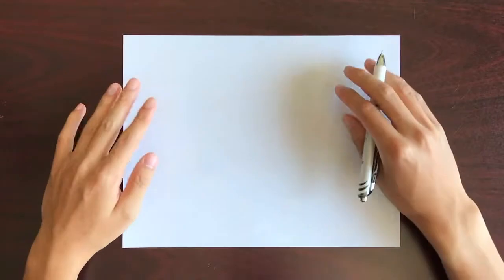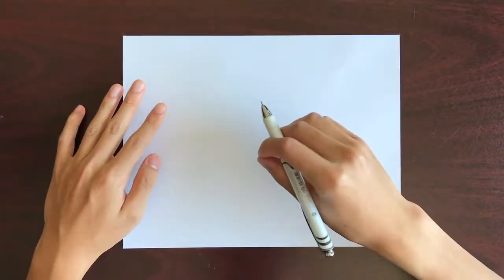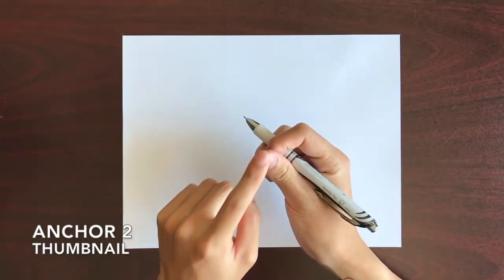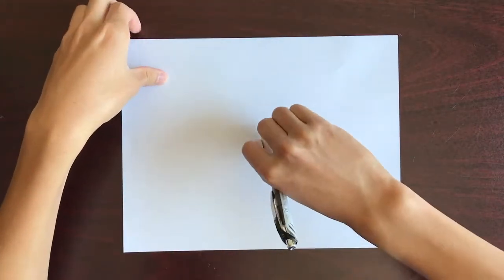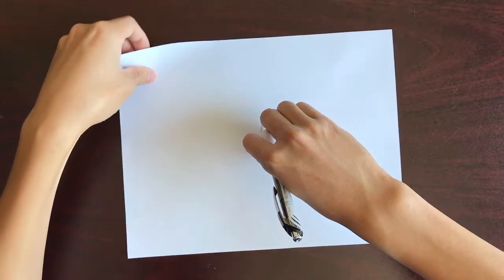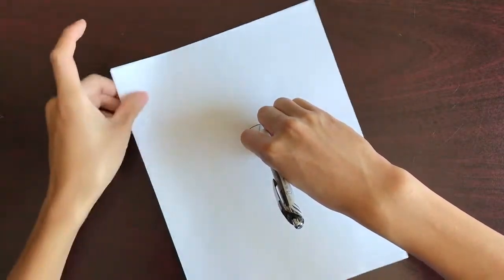We can also use other anchor points to pivot around. Locate the tip of your thumb and place it firmly on the piece of paper. We are able to draw a smaller circle with this technique.